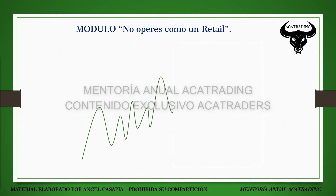Sabemos que los movimientos direccionales parten de una neutralización, sobre todo de aquellas que se forman con un cuerpo de vela, porque estas son las que establecen los máximos y mínimos dentro de un gráfico de líneas. Vamos a darnos cuenta de que en algún punto, cuando veamos máximos o mínimos cada vez más altos o bajos, esto se va a terminar, porque el IPDA en algún momento va a neutralizar.